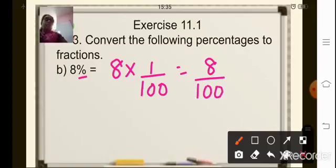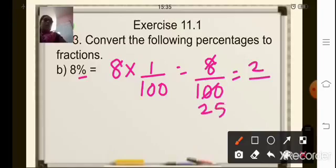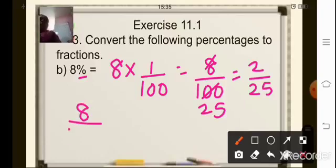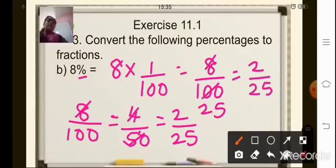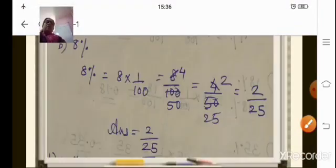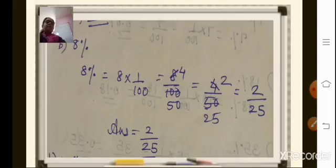8 and 100 are divisible by 4. You can divide it step by step: first by 2 to get 4 upon 50, then by 2 again to get 2 upon 25. Or you can directly cancel by 4: 4 times 2 is 8, and 4 times 25 is 100, giving 2 upon 25. You can just calculate it and then check your answer from the slide.